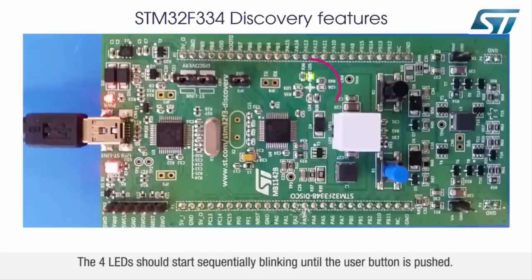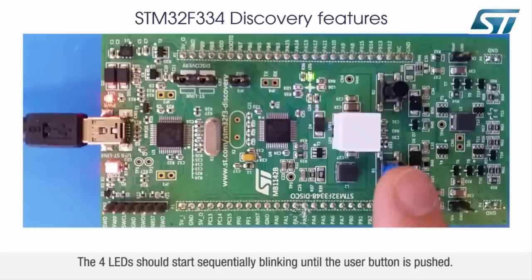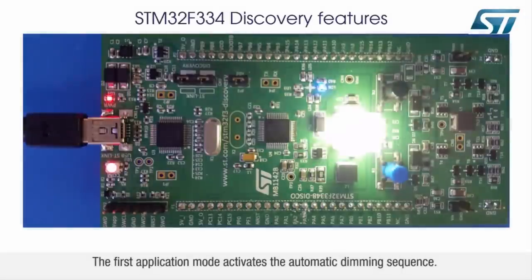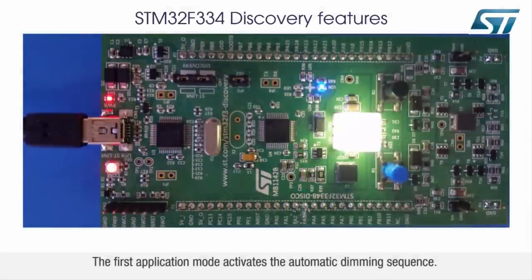Let's now operate the STM32F334 Discovery. First, connect the board to a PC. The four LEDs should start sequentially blinking until the user button is pushed. The first application mode activates the automatic dimming sequence.